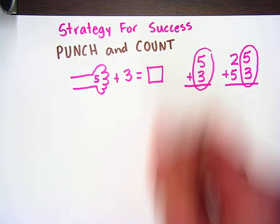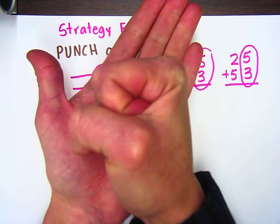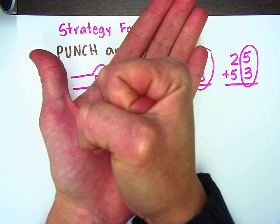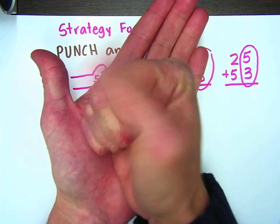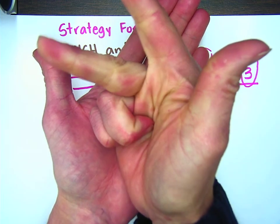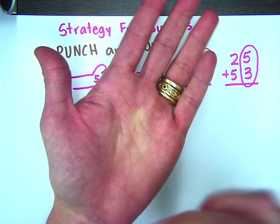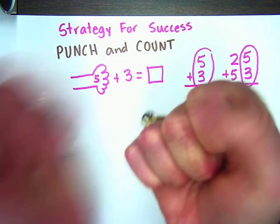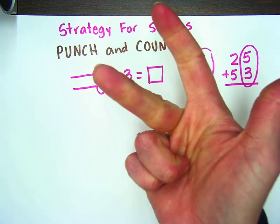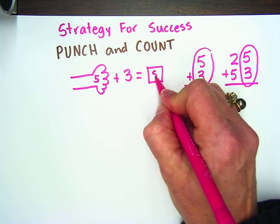So, I get my hands ready, and I say five, which is what I've punched, and then I'm going to count three more fingers. They're going to go like this, one, two, three. So, when I punch and count, it goes like this, five, six, seven, eight. So, five plus three equals eight.